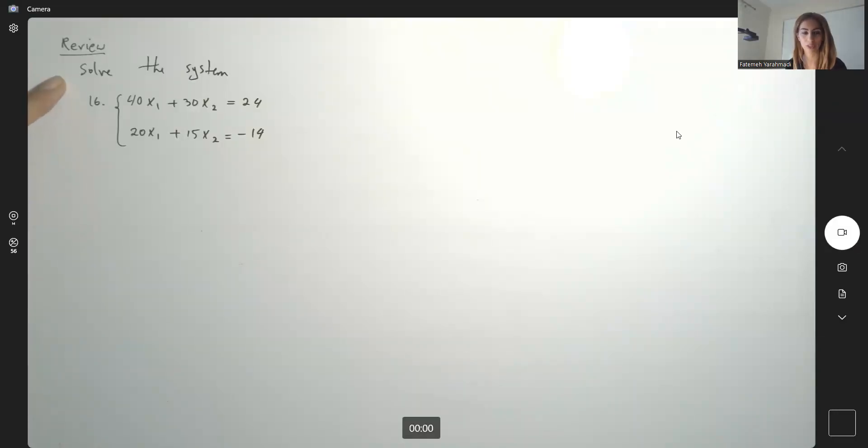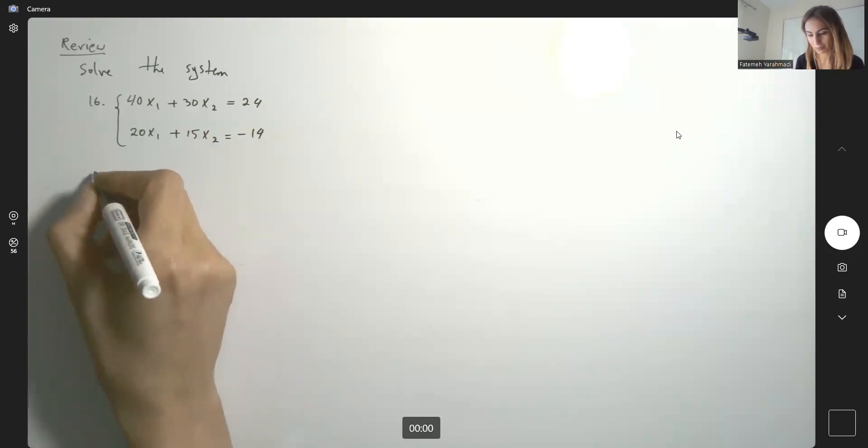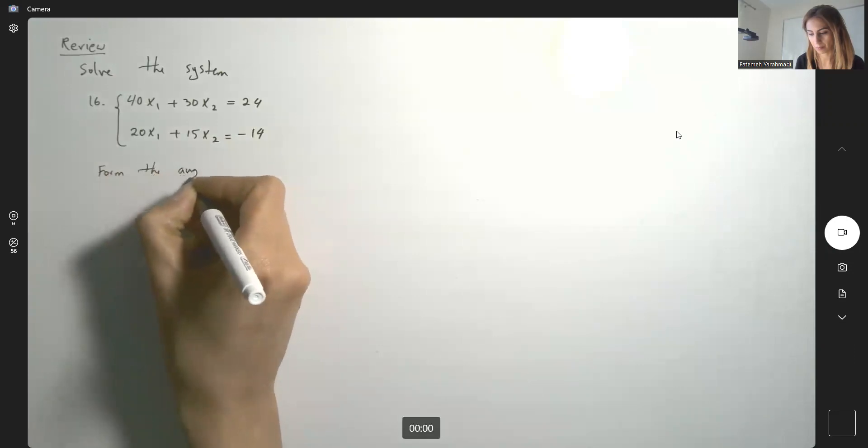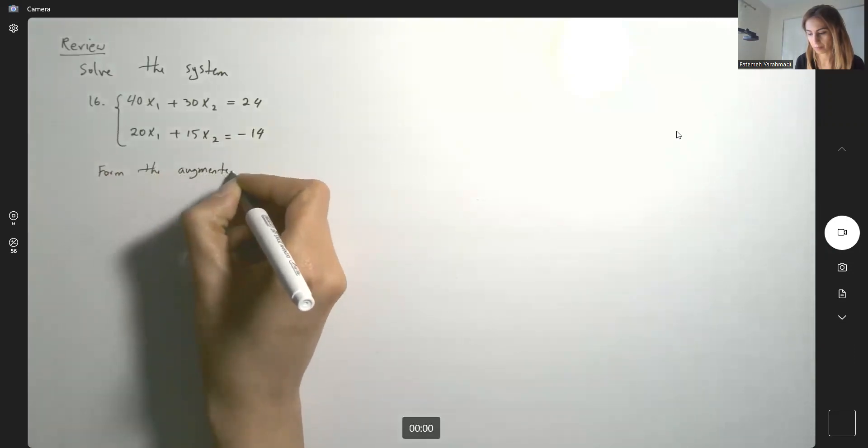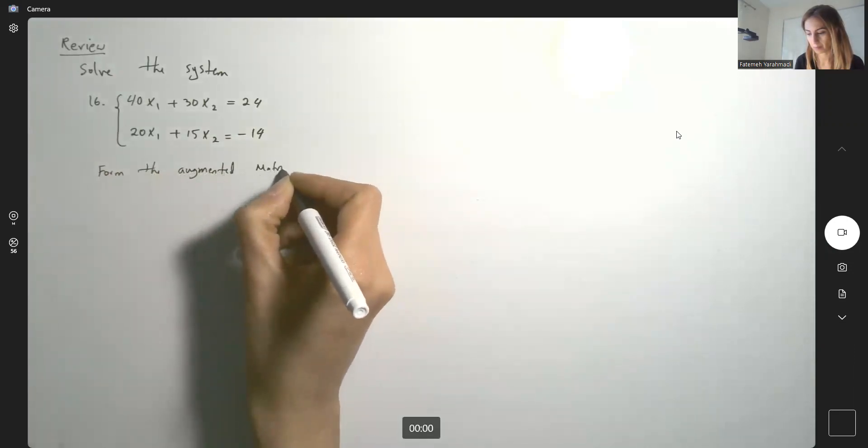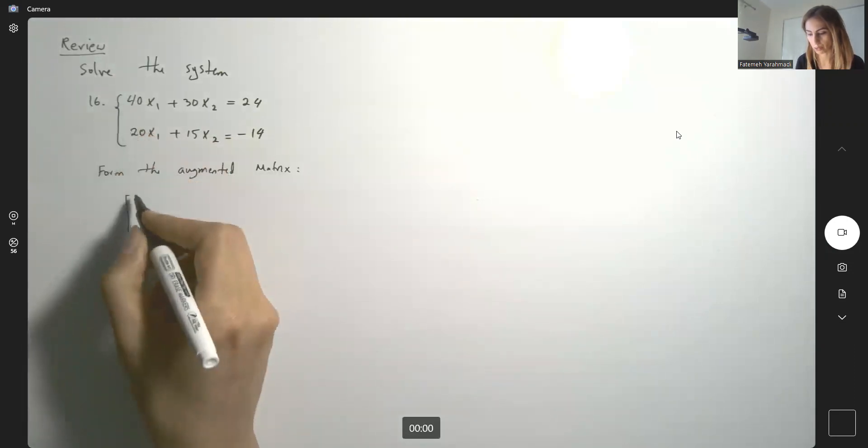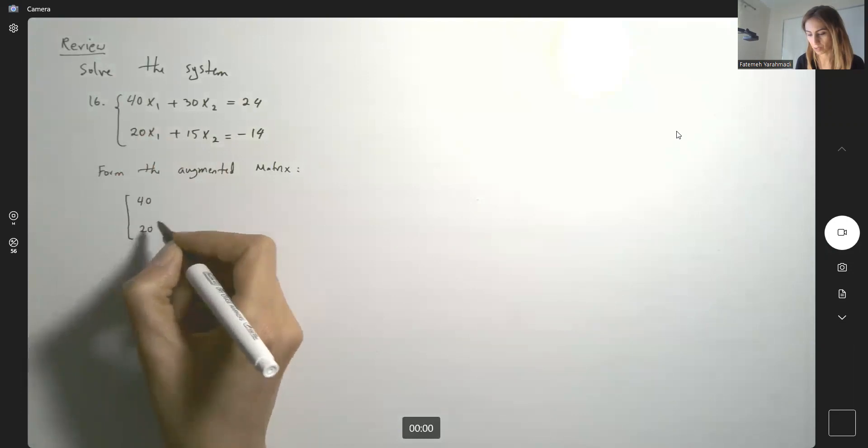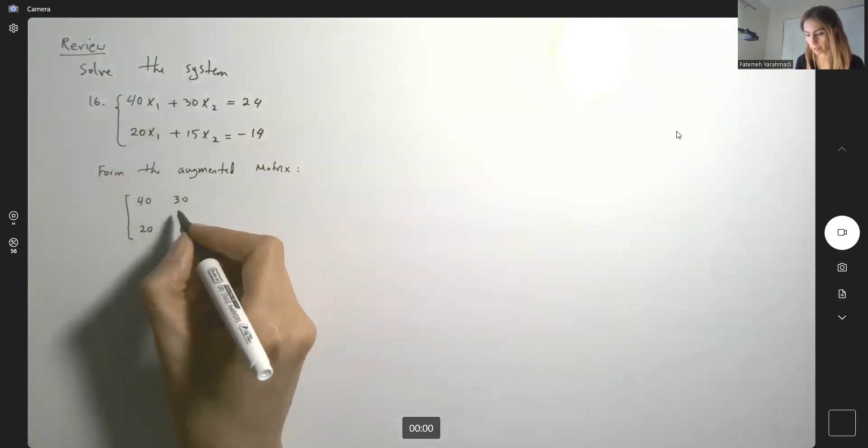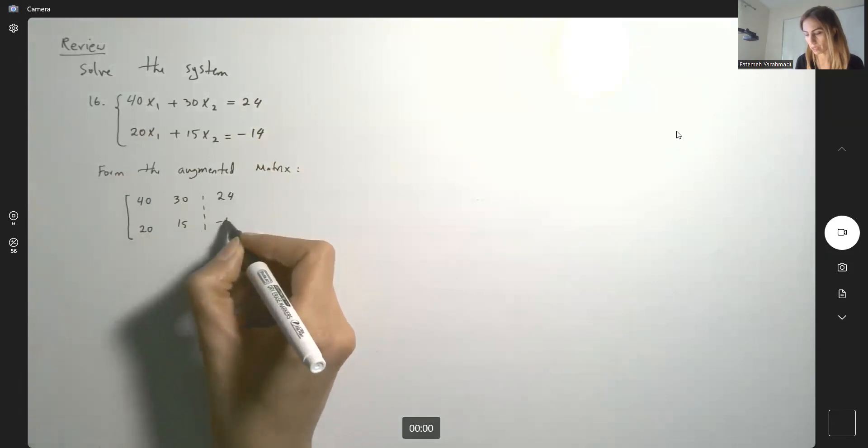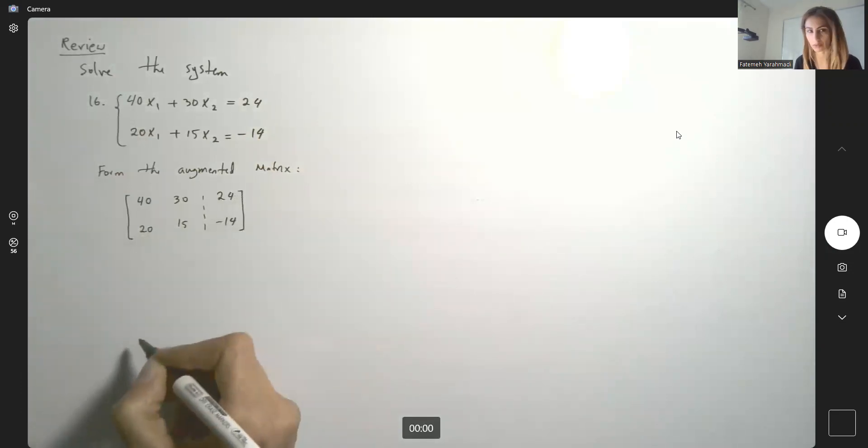The question is to solve the following system. Let us form the augmented matrix. 40, 20 is your first column. Then you have 30, 15, and you have the constants, 24 and negative 14.